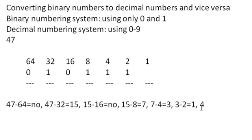3 minus 2 is yes. Okay. 1 minus 1. Yes, we can do that. And that's 1. So 47 in binary is this.